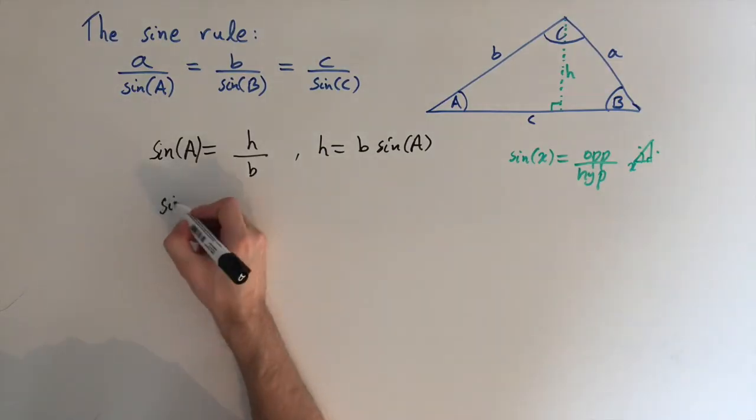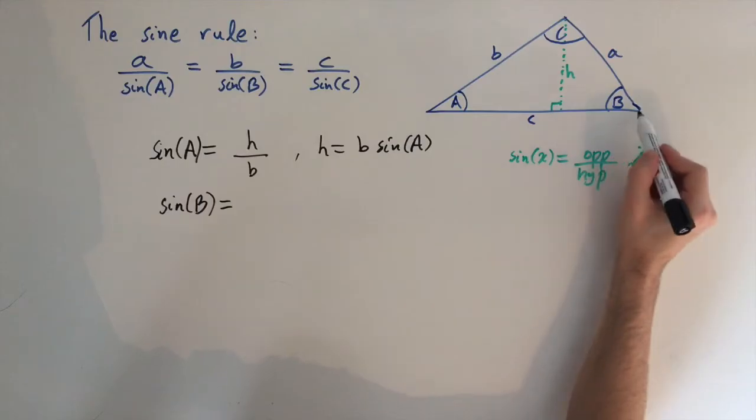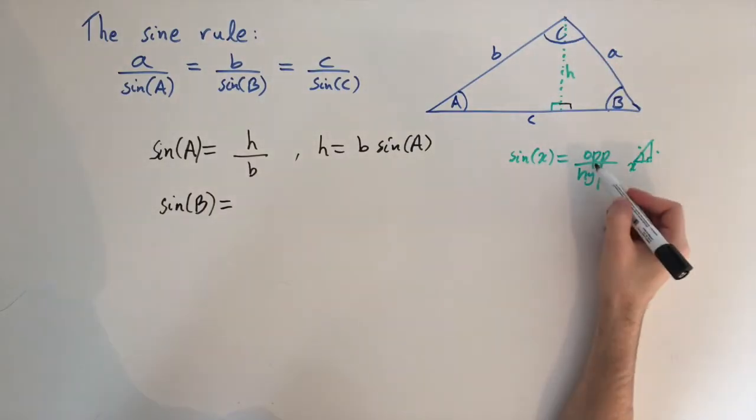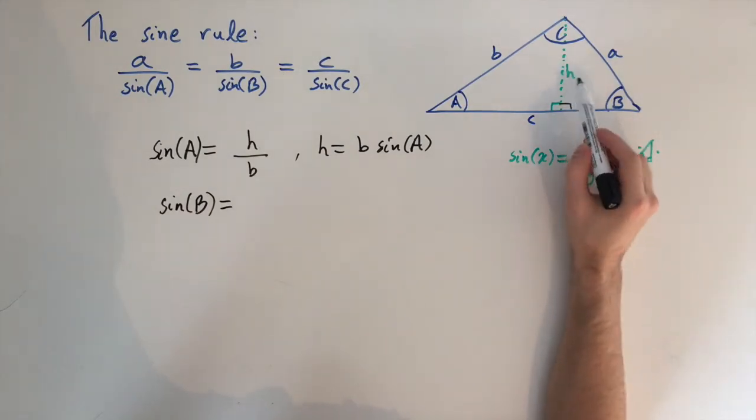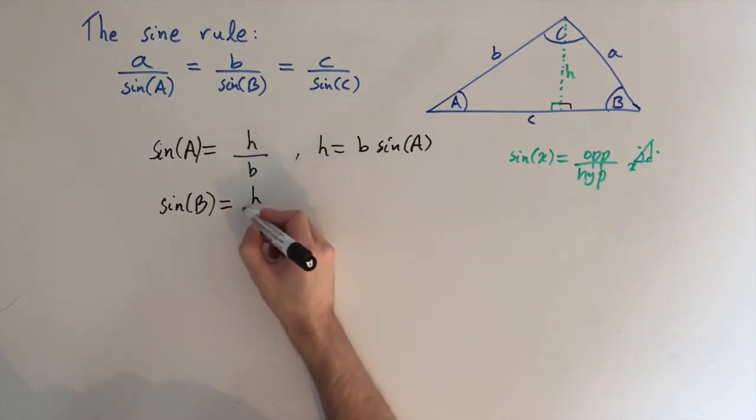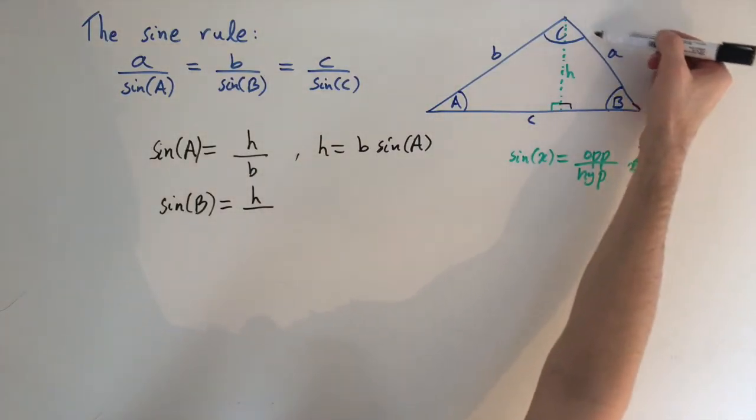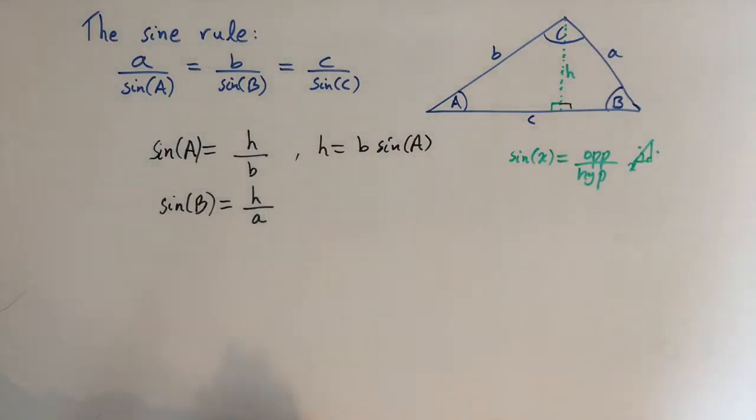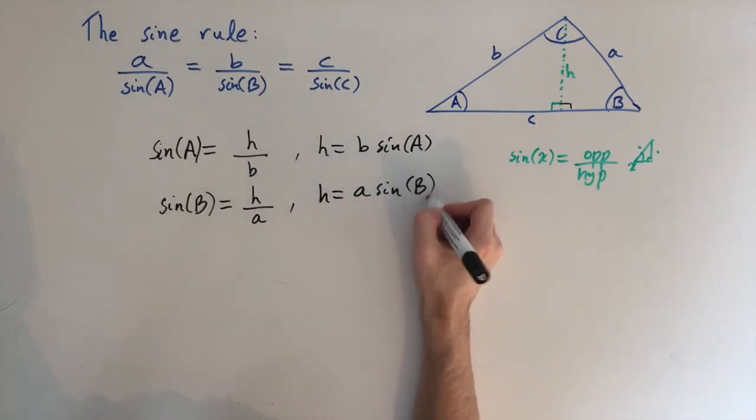So to find sine of b, it's kind of a similar strategy. We now look at this right angle triangle, the one on the right. So this is also 90 degrees, and we can just use this definition, so the ratio of the opposite length to the hypotenuse. The opposite is again h, but now the hypotenuse isn't b, it's actually this length, the longest side of the small triangle, and this is a. So we have h divided by a, and again we can rearrange in terms of h, so h equals a times sine of b.